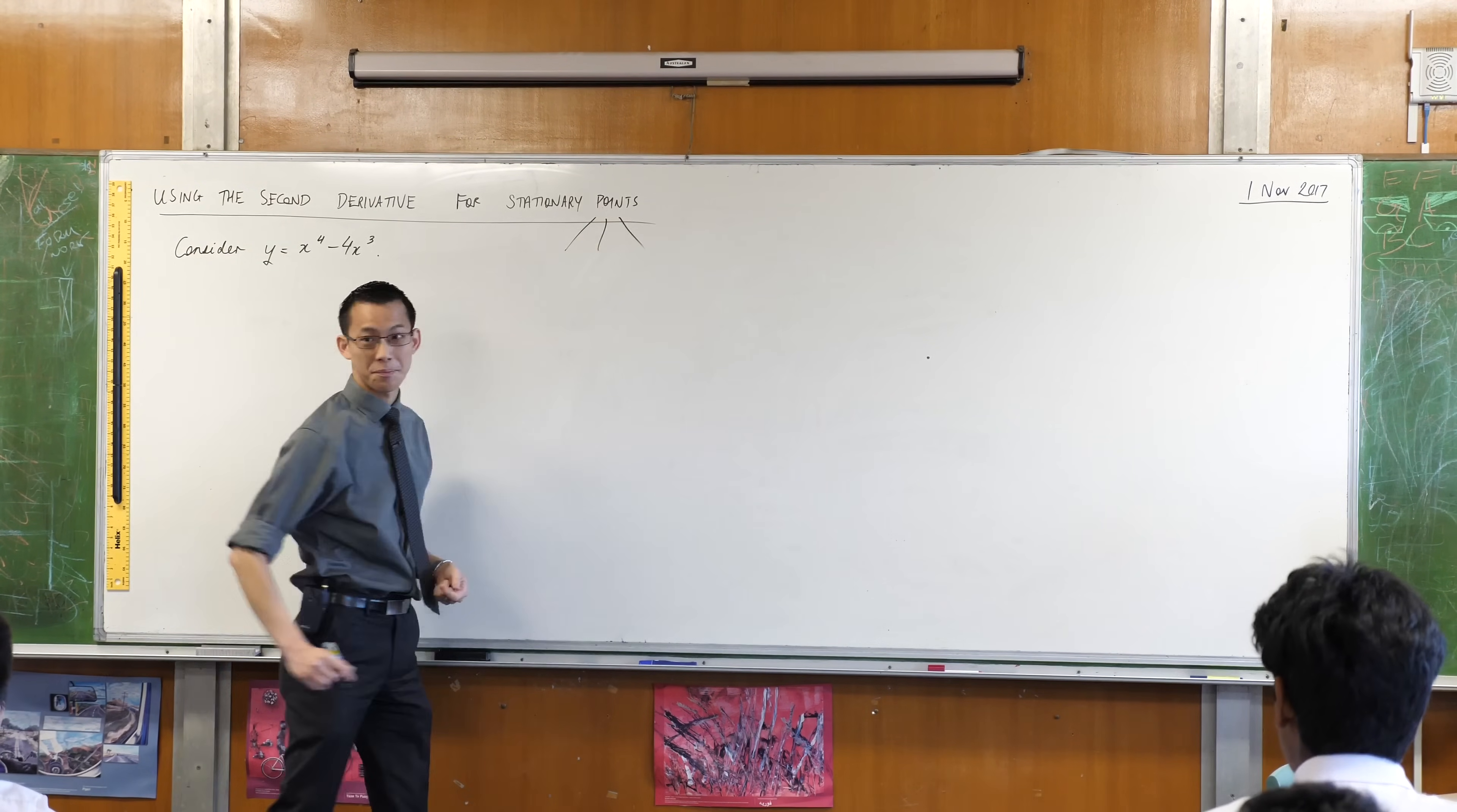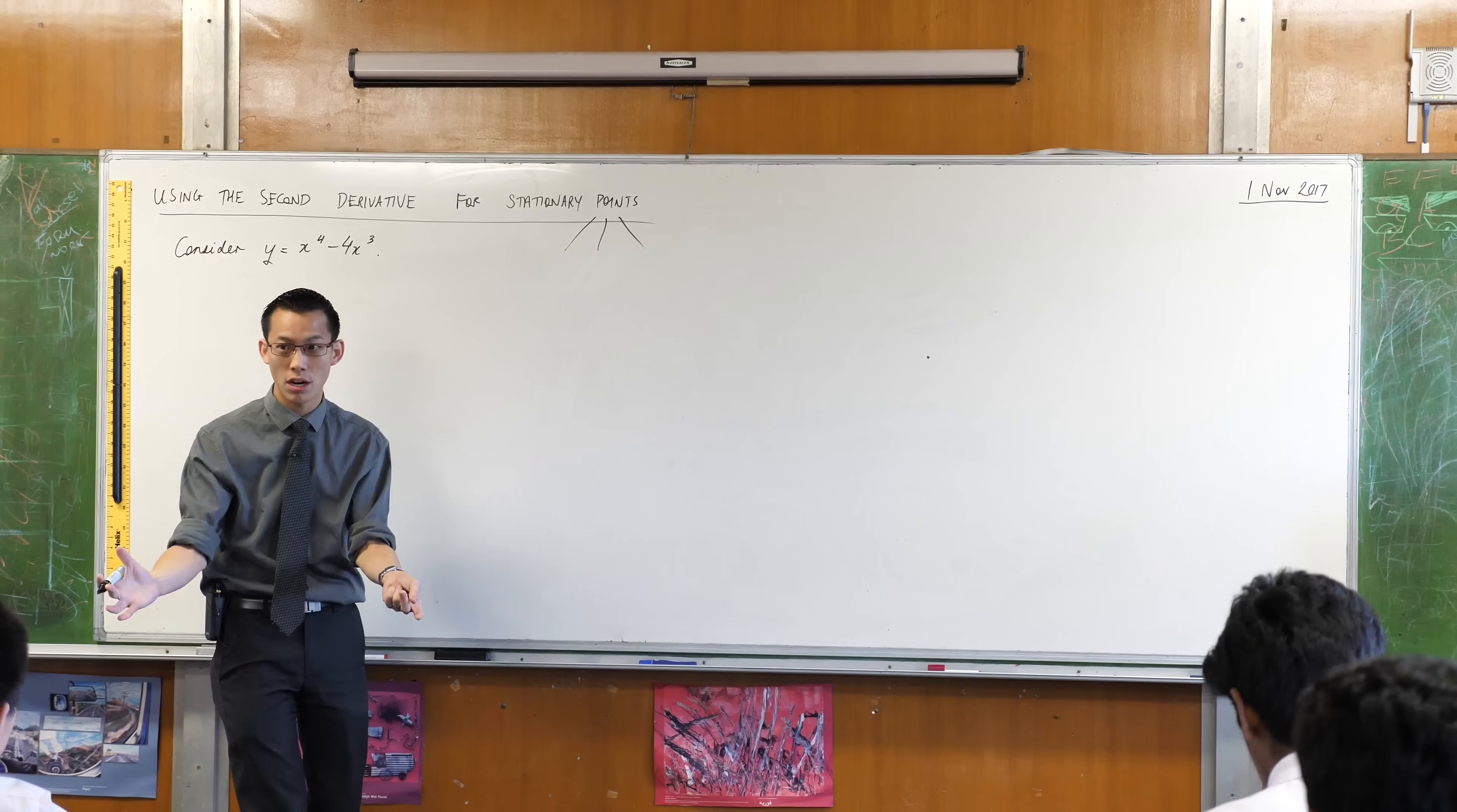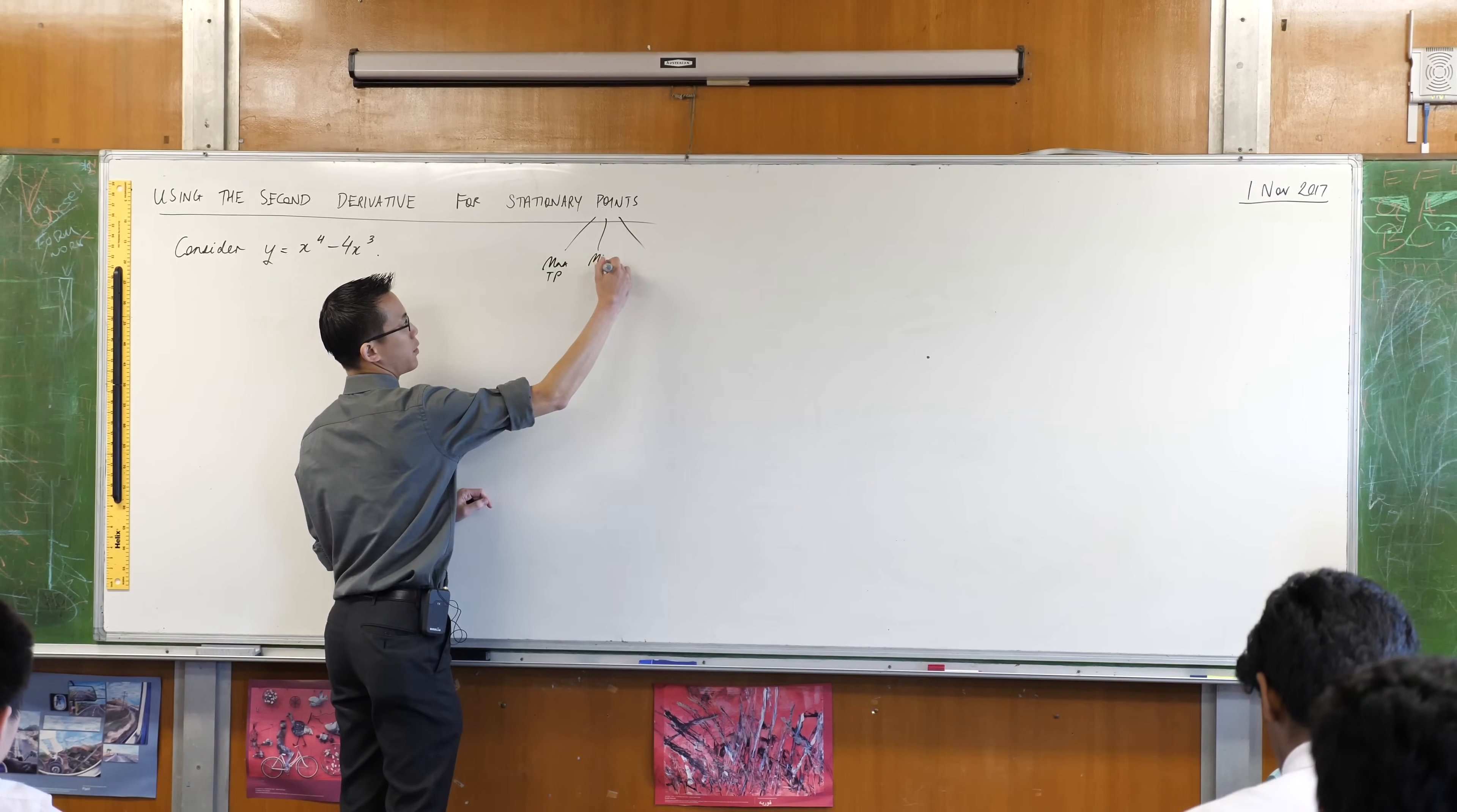What are they? One, two, three. What kinds of things are we going to expect? We can have turning points, of which there are two kinds. What kinds of turning points are there? There's a maximum turning point, and there's a minimum turning point. So we know what those are.